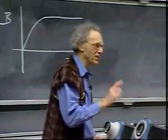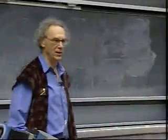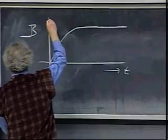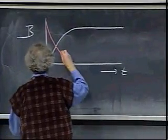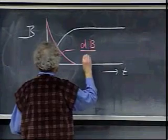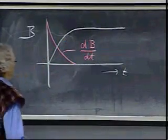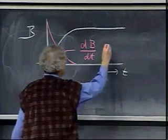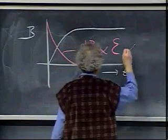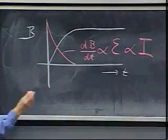We are not interested in the magnetic field. We are interested in the change of the magnetic field. So the change of the magnetic field, dB/dt, is going to be something like this — that's the derivative of this curve — and that is proportional to the induced EMF, and that's proportional to the current through Ohm's law.